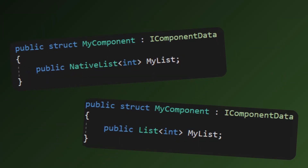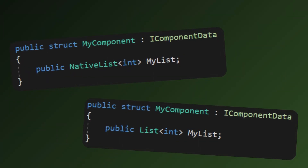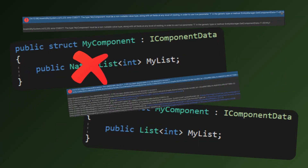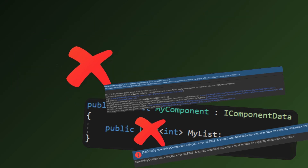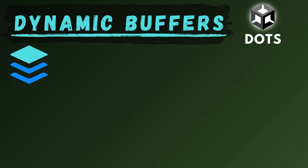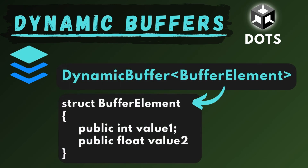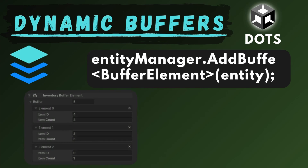You may notice that you can't add lists or native lists into components in Unity ECS. Dynamic buffers work almost the same way as lists — you specify the type that the buffer will be holding, and then you can add it to entities the same way as you would with components.